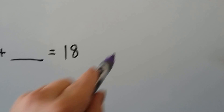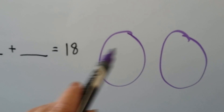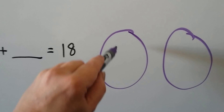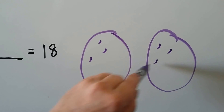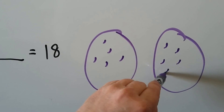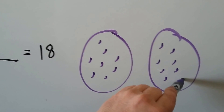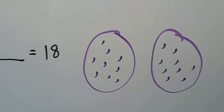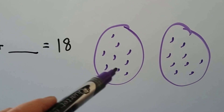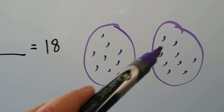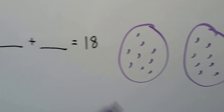Let's try it with 18. We make two big groups and take turns putting dots in them counting up to 18: 1, 2, 3, 4, 5, 6, 7, 8, 9, 10, 11, 12, 13, 14, 15, 16, 17, 18. How many dots are in each group? 1, 2, 3, 4, 5, 6, 7, 8, 9. Let's be sure: 1, 2, 3, 4, 5, 6, 7, 8, 9. So 9 plus 9 is equal to 18.